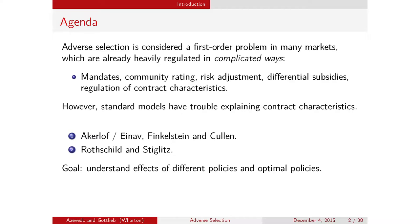What I mean by this is that the two workhorse models in the literature: one is the Akerlof model and then the generalization by Einav, Finkelstein, and Cullen, which is the workhorse model of most applied papers in the literature. The typical assumption is that there is only one kind of product that you can buy—either I buy insurance or I don't—and the characteristics are exogenous, so you can't really talk about how equilibrium is going to change the characteristics.